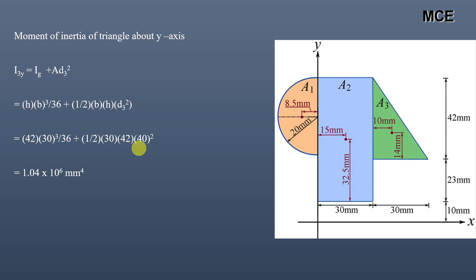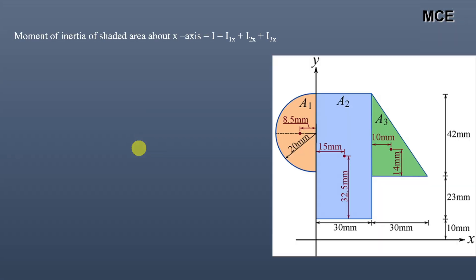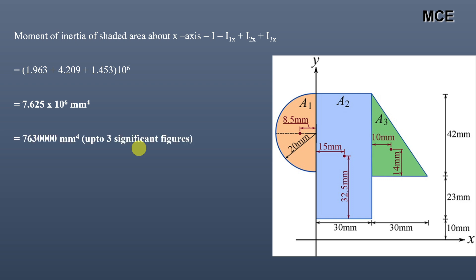Finally, the moment of inertia of this composite shape about the x-axis is I₁x + I₂x + I₃x = 1.963 + 4.209 + 1.453 = 7.625 × 10⁶ mm⁴, or approximately 76,300 mm⁴ written to three significant figures.